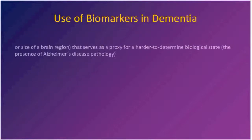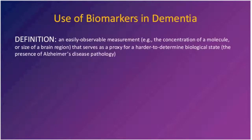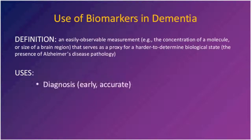How are biomarkers used in dementia? A biomarker is some sort of easily observable measurement — for instance, the concentration of a molecule or the size of a brain region — that serves as a proxy for a harder-to-determine biological state, such as the presence of Alzheimer's disease pathology. The uses of biomarkers are at least twofold: first, they can help establish a diagnosis earlier and with greater accuracy than traditional clinical markers; and second, a biomarker should track the disease over time, getting worse as the disease worsens.